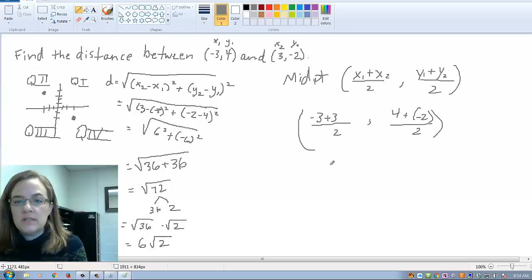So, this one ends up giving us 0 over 2, which is then 0. This one ends up giving us 2 over 2, which is 1. So, at (0, 1).